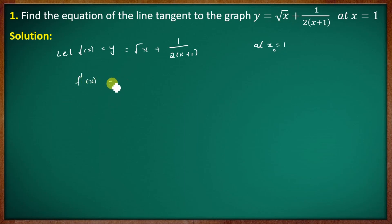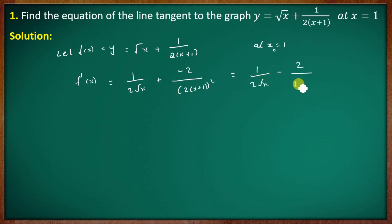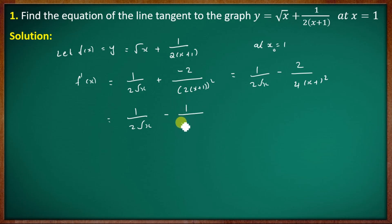Now, f'(x) — taking the derivative: the derivative of √x is 1/(2√x), and the derivative of (1/2)(x+1) gives minus 2 divided by (2x+1)² — simplifying to 1/(2√x) minus 1/(2(x+1)²).